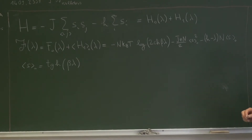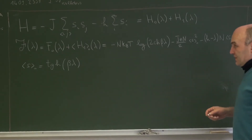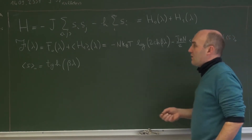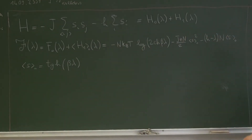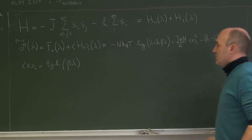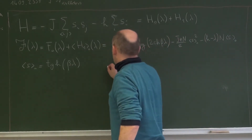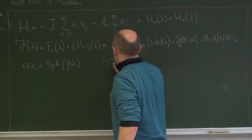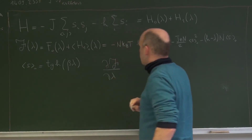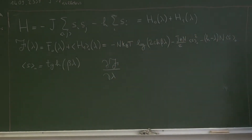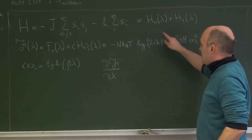The Bogoliubov procedure tells us that the best approximation to our free energy is obtained by minimizing, with respect to λ, this f of λ. So we minimize now. We take the derivative of this f with respect to λ and we set it equal to zero. This will give us the optimal value of λ, and therefore the optimal free energy. This is the calculation that we can do here.